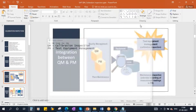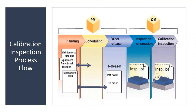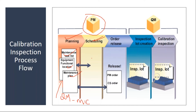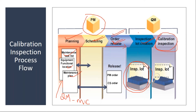The process flow starts with planning activity in the PM module. They will create all the necessary master data, and in this master data you will link your QM MICs. After that they will do the scheduling, and when scheduling is done it will generate an order — normally called a calibration order. When the calibration order is created and released, the system will automatically generate an inspection lot, and using this inspection lot they will do the calibration activity in the QM module.